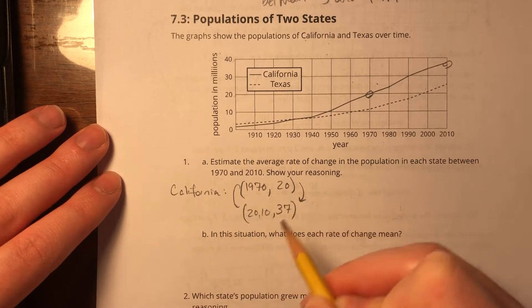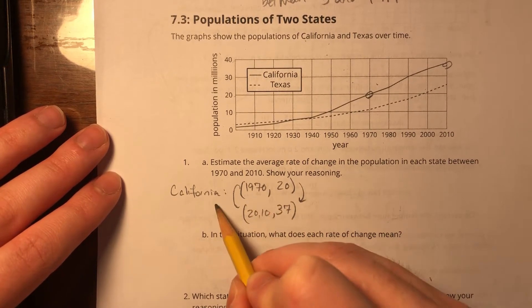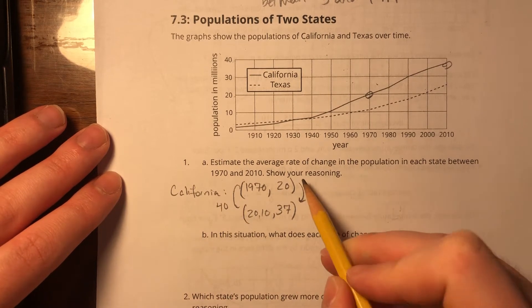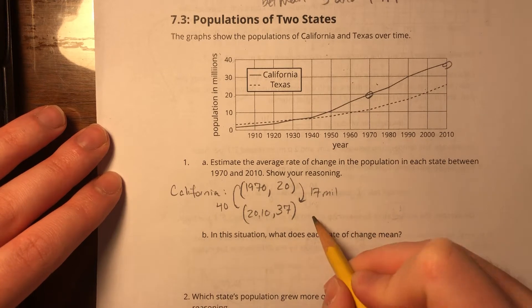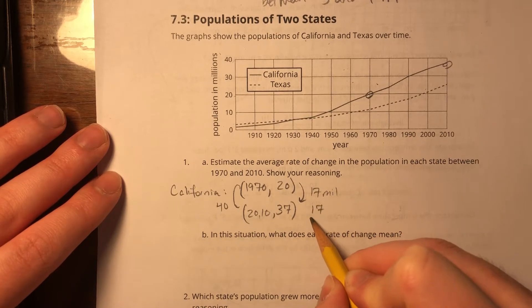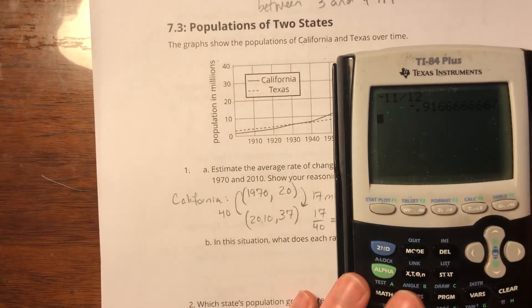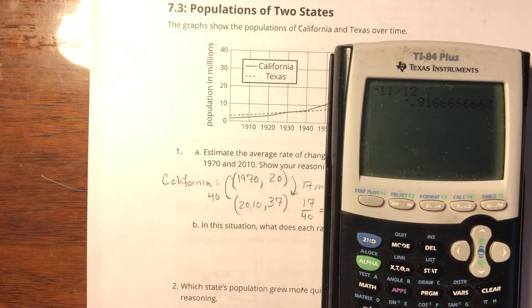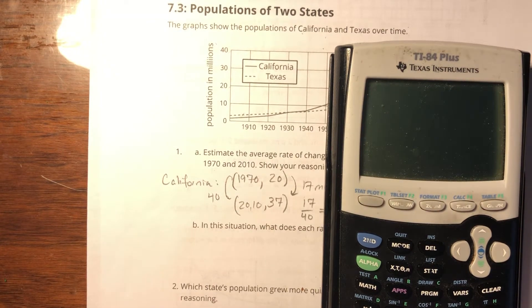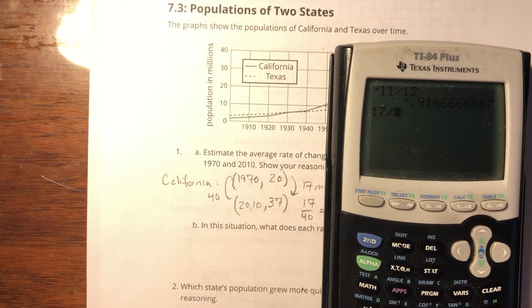So change in y, change in x—I'm sorry, change in x, change in y. My change in x is 40 years and my change in y is 17 million. So that will be 17 over 40. I'm going to take out a calculator because I cannot do that in my head. 17 over 40.